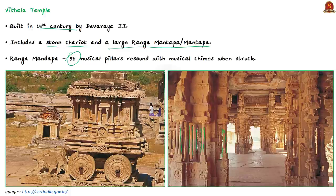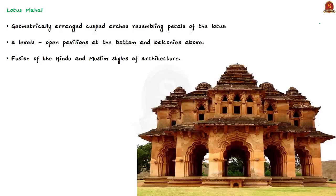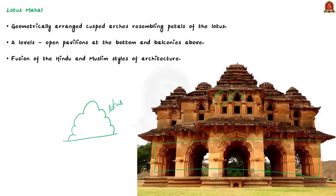You would have seen this stone chariot on the Indian 50-rupee note — the currency carries the image of the stone chariot of Hampi. Next, the Lotus Mahal derives its name from its beautifully geometrically arranged cusped arcs. These arches resemble the petals of a lotus opening to the sun. The structure has two levels with an open pavilion at the bottom and balconies above. It highlights the fusion of Hindu and Muslim styles of architecture.